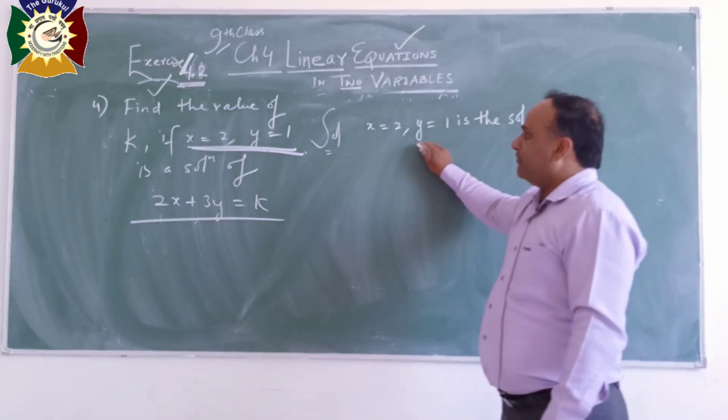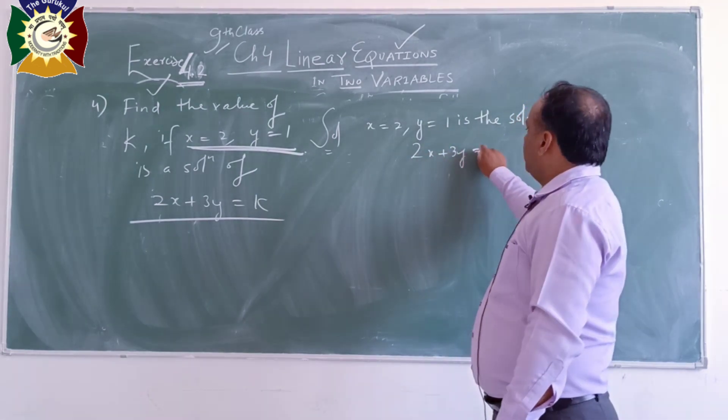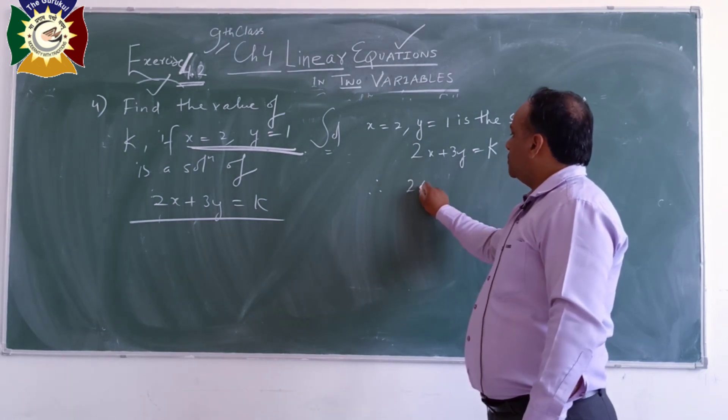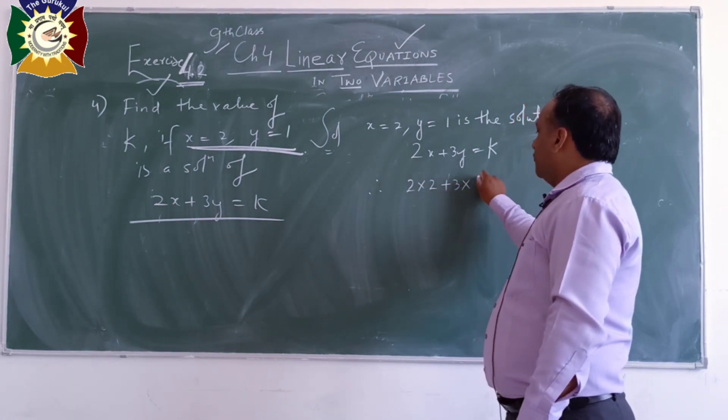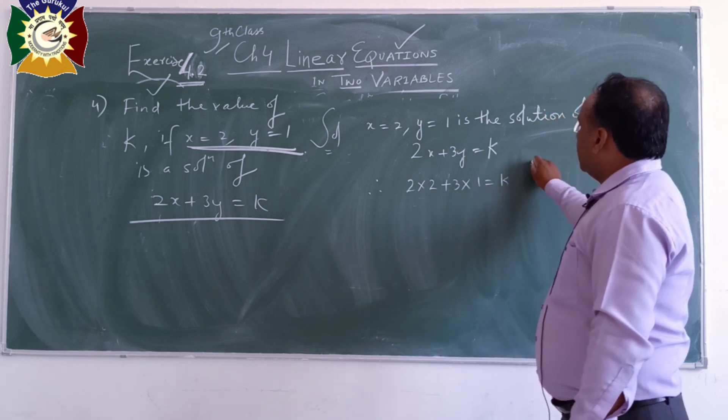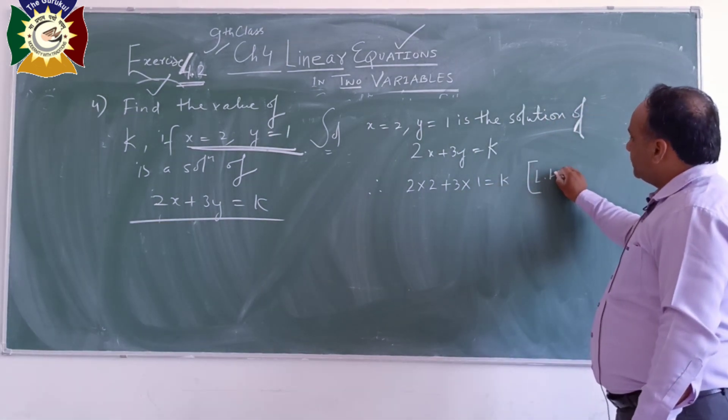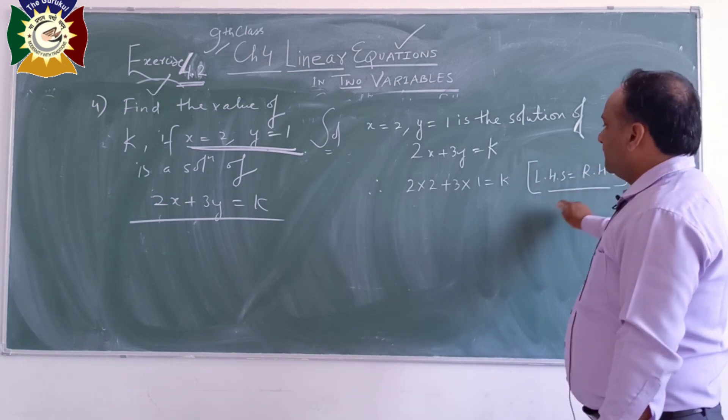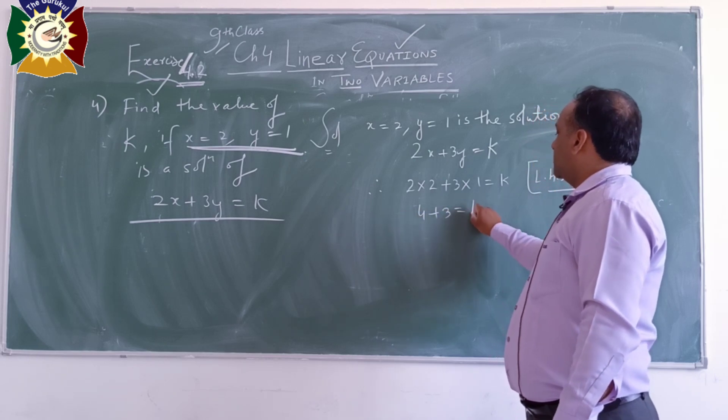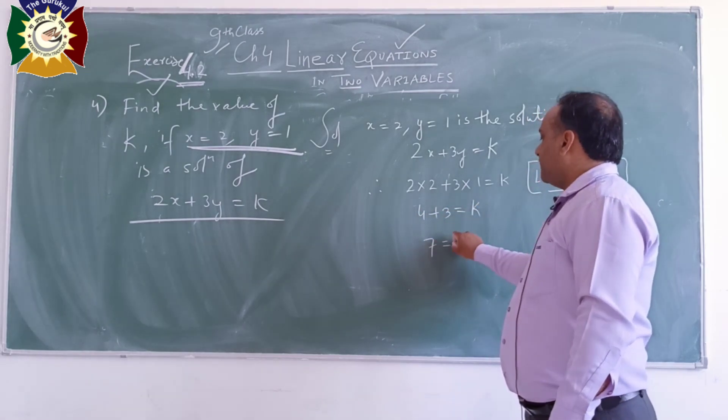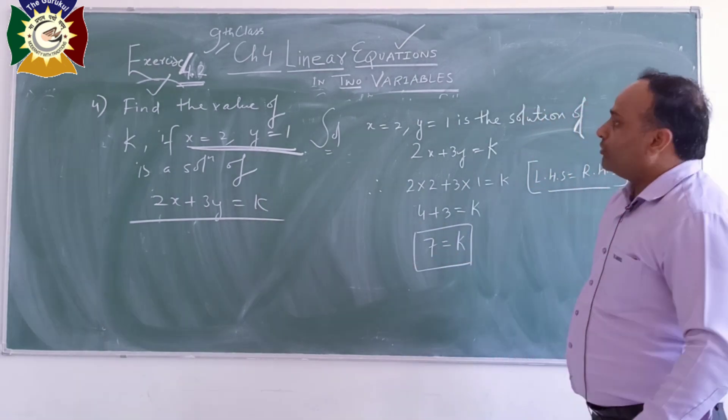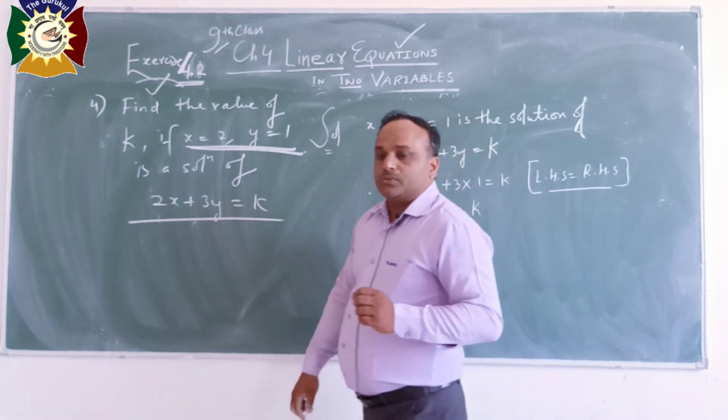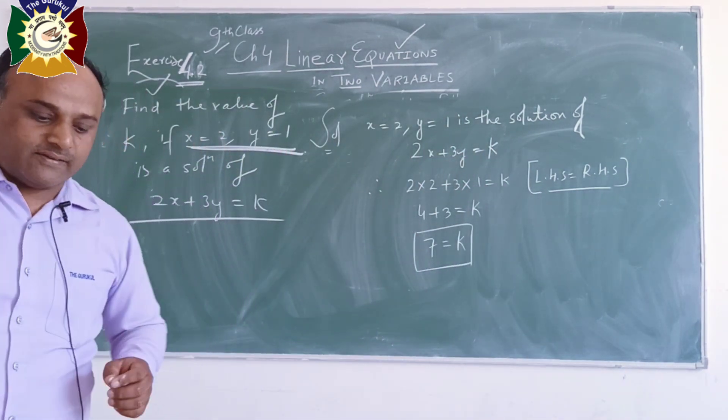Therefore, 2 into 2 plus 3 into 1 is equal to k. LHS is equal to RHS. So it becomes 4 plus 3 is equal to k. So 7 is equal to k. So when x is equal to 2 and y is equal to 1, k is equal to 7. Value of k will be 7.